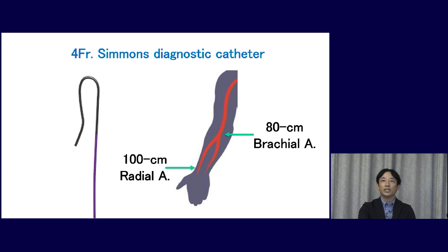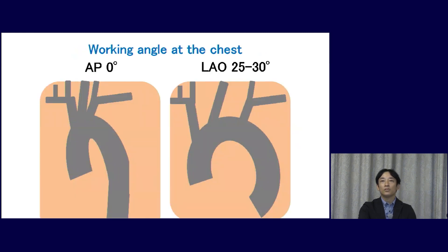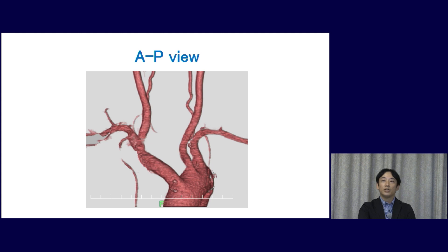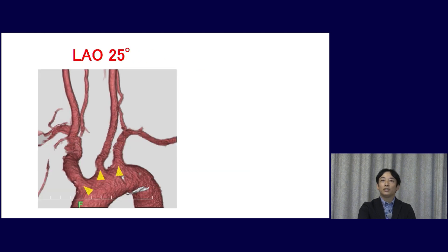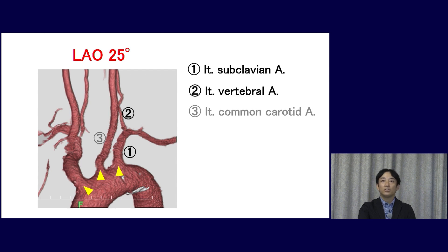This is for the French Simon's diagnostic catheter. An 80 cm catheter has better control than a longer catheter. However, in the case of the radial approach, I recommend over 100 cm length catheter. I recommend an oblique view rather than the anterior-posterior view because the oblique view shows better visualization of each artery. As seen in the AP view, it's difficult to recognize the origin of each artery, whereas the left oblique view shows clear visualization of all target vessels.